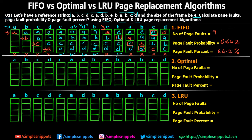Now let's move to the second algorithm: optimal. Initially for the first four steps, page faults are definitely going to happen because there is nothing in the frames, same as before. So all pages A, B, C, D are loaded with page faults. The first four page faults happen in the optimal page replacement algorithm as well.